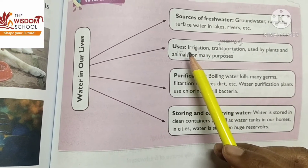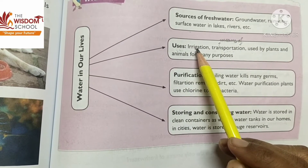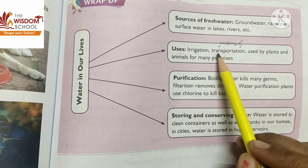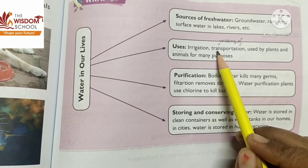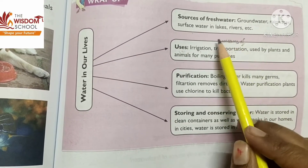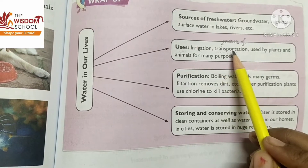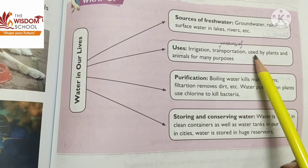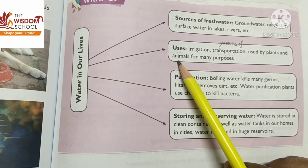Human beings need water for different daily household needs — daily household codes ke liye water ka use karte hai. Other than that, hum irrigation ke liye bhi water ka use karte hai. Boats and ships jo hote hai, water pe move on karte hai — that is why water ek means of transportation bhi hai.